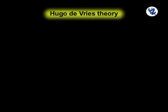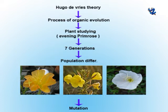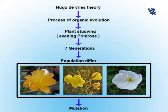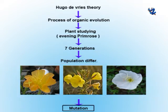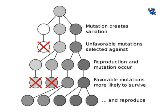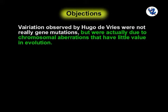Hugo de Vries proposed the mutation theory to explain the process of organic evolution. He proposed this theory by studying the plant called evening primrose for seven generations. He observed certain striking differences in forms which appeared suddenly amongst a population of normal evening primrose. He called this phenomenon mutation and the changed forms as mutants. Mutation means a sudden change taking place in the genetic material of organisms that is heritable. The main feature of mutation theory is that it provides the raw material for organic evolution by which new species originate.